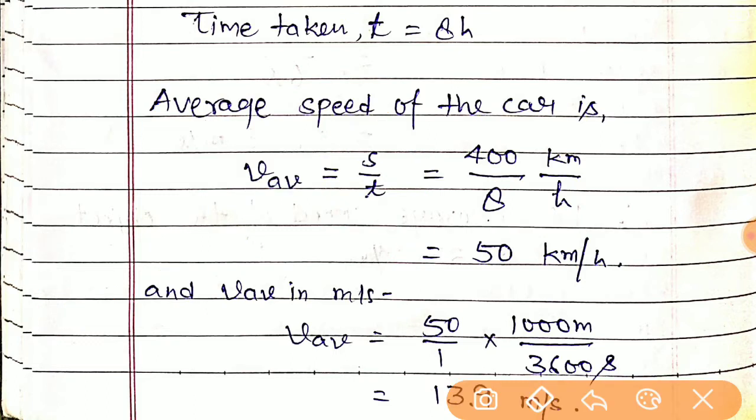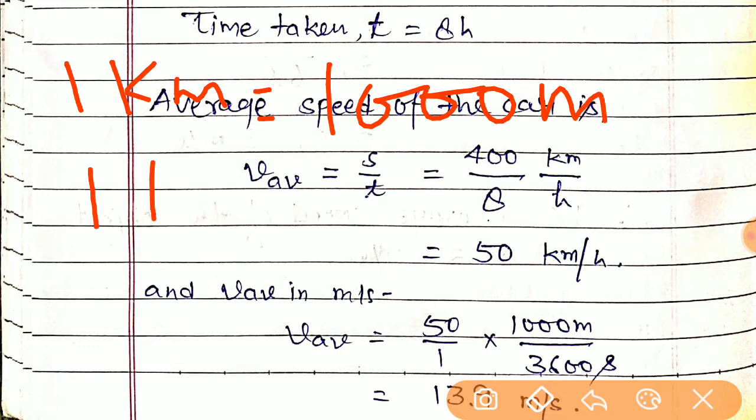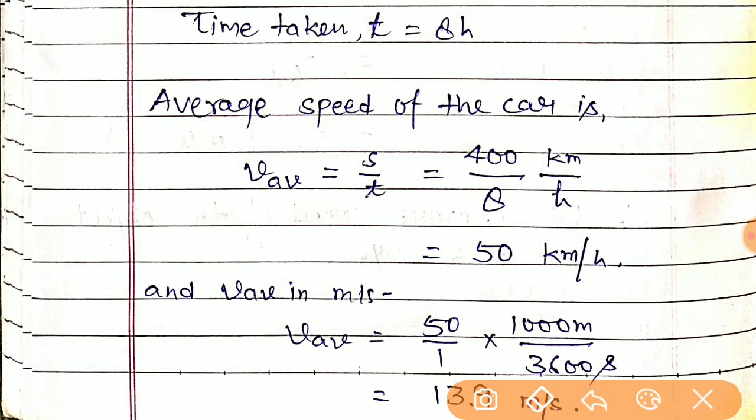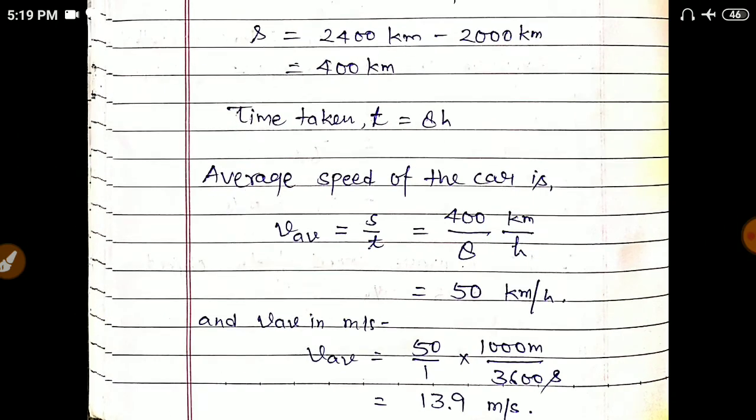Now to convert to meters per second: one kilometer equals 1000 meters, and one hour equals 60 minutes times 60 seconds, which is 3600 seconds. So we put 50 times 1000 meters divided by 3600 seconds, which gives 13.9 meters per second. This is the average speed of the object. I hope you understood both numericals. Please practice them in your notebook. Thank you very much.